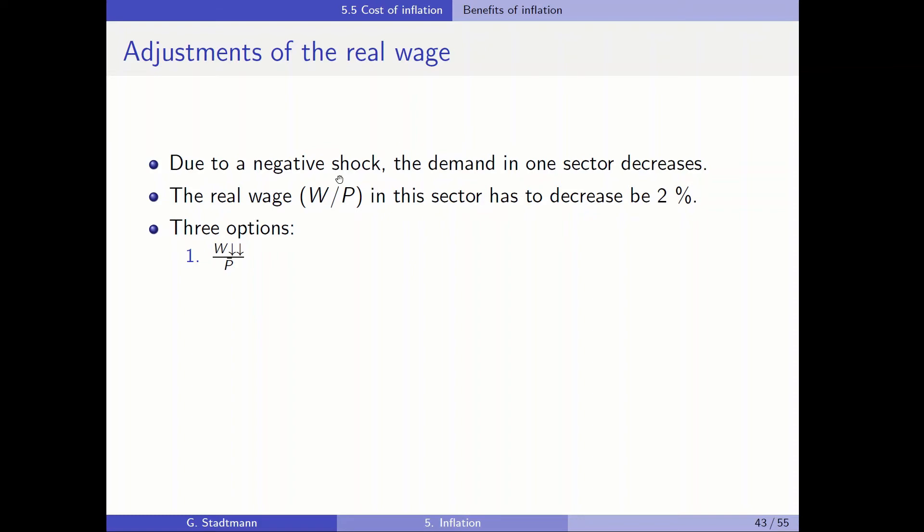There are three options how the real wage can decrease. Option number one, we are decreasing the nominal wage by 2%. Option number two, there is an inflation rate of 2% and the nominal wage is constant. And the third option is that in a situation where the inflation rate is 5%, nominal wages can even increase by 3% and once more the real wage would decrease by 2%. In which of these three situations is it easier to decrease the real wage by 2%?